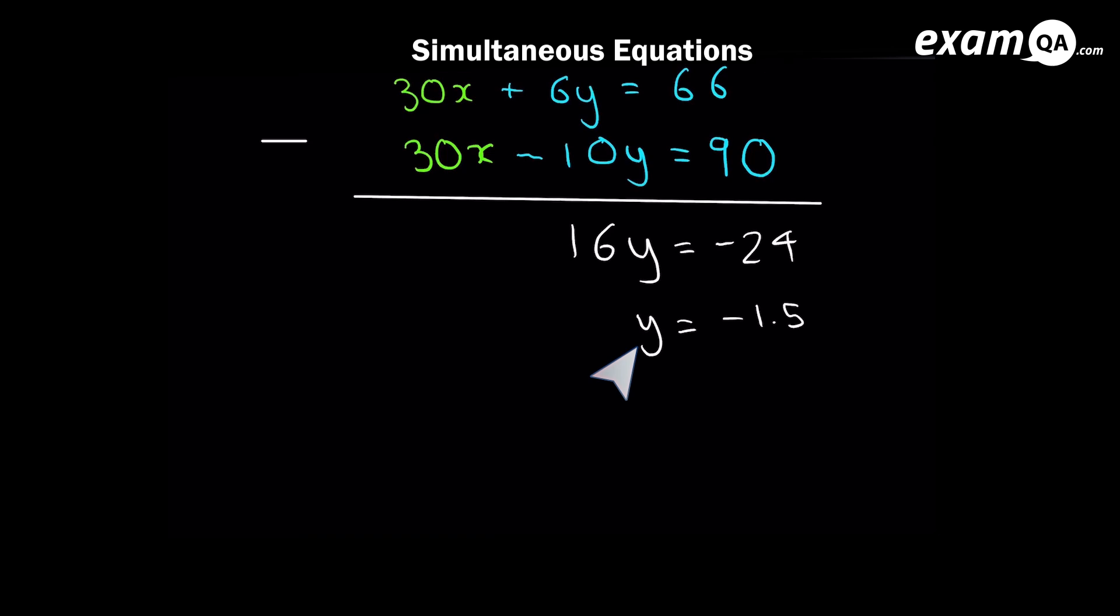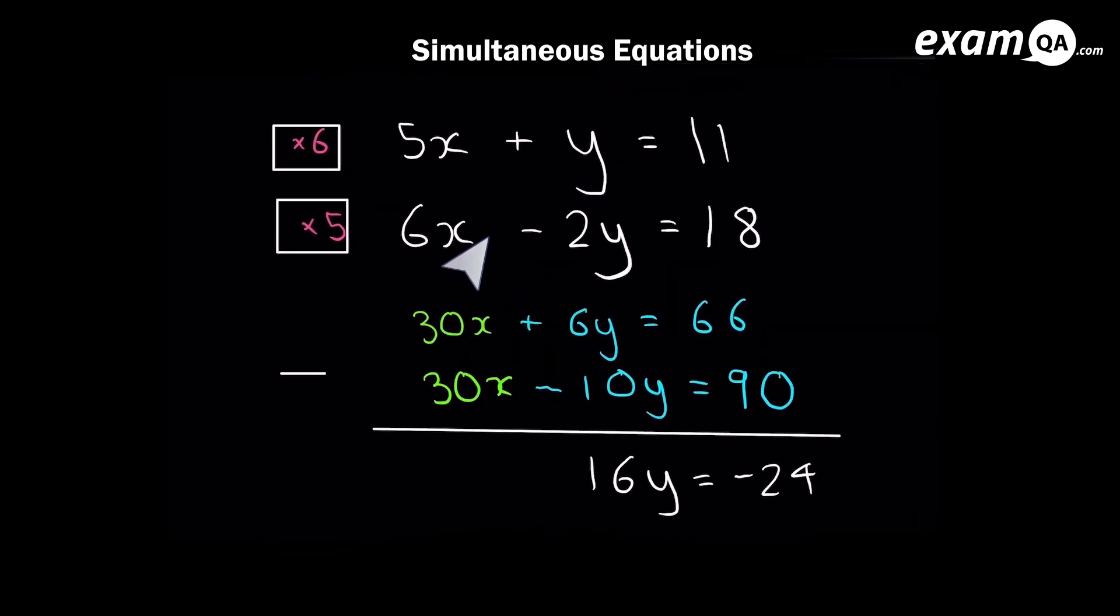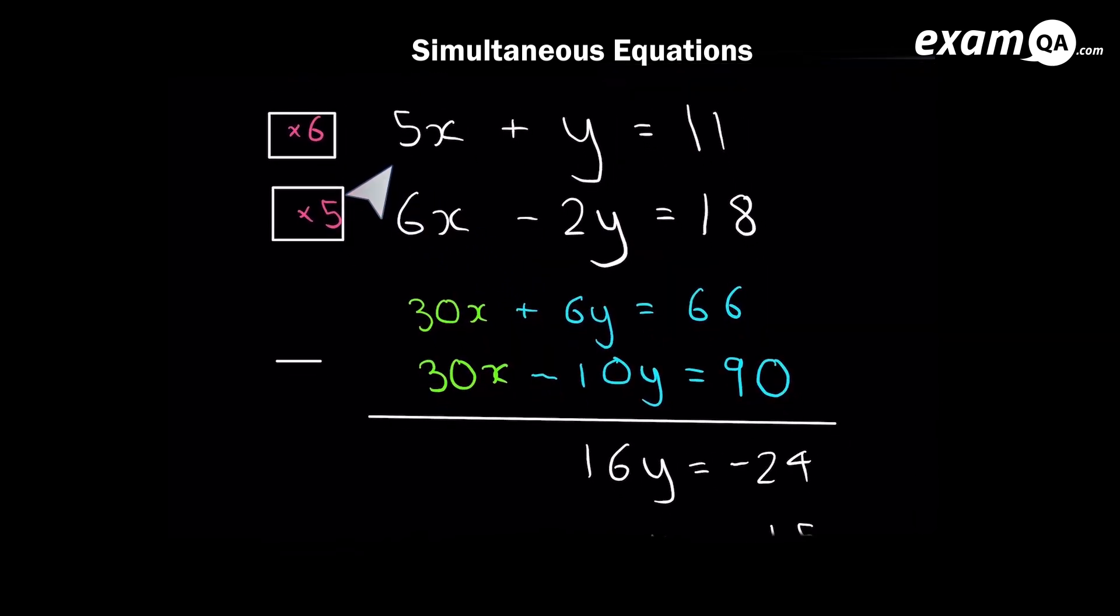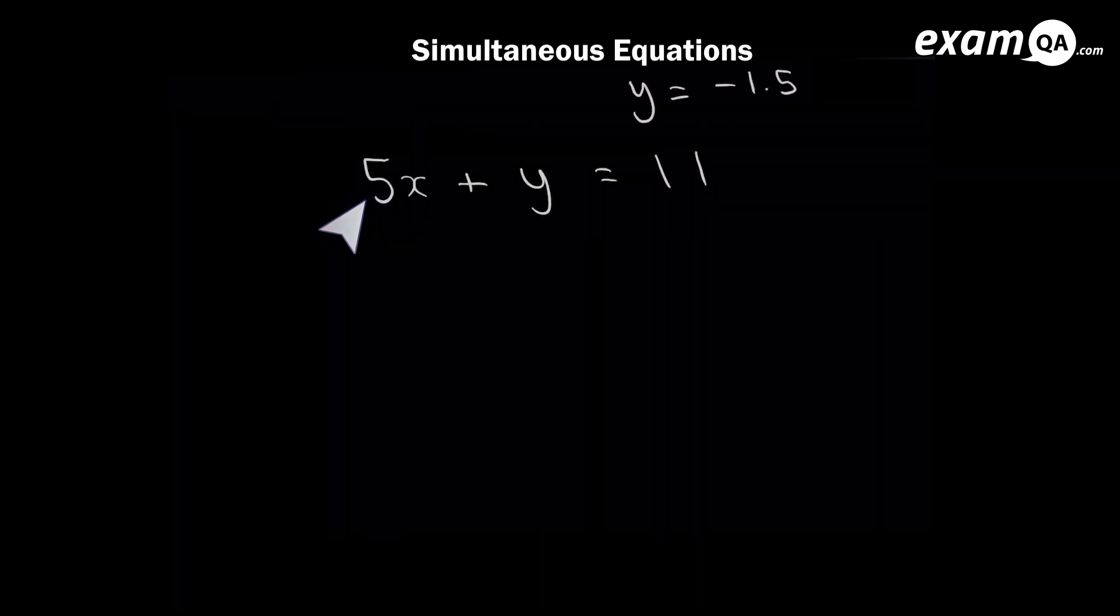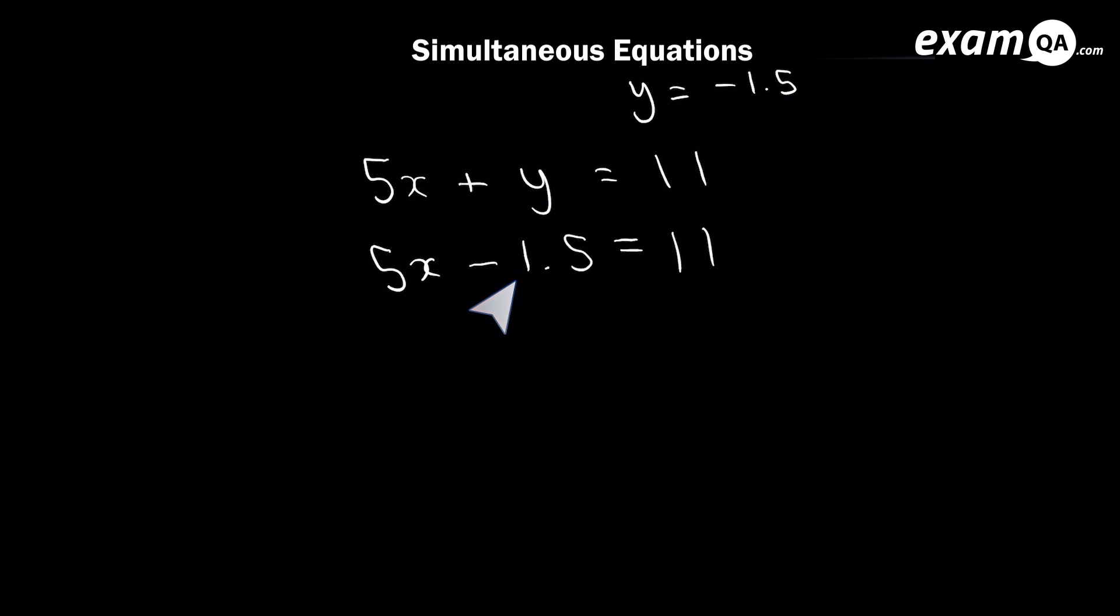Now we just need to throw this minus 1.5 into one of the first two equations. So we've got 5x. This is plus y. But y is minus 1.5. So we just write minus 1.5 there. 11 stays as 11. So we need to add 1.5 to both sides. And dividing both sides by 5 gives us, again you could do this in a calculator, x equals 2.5.